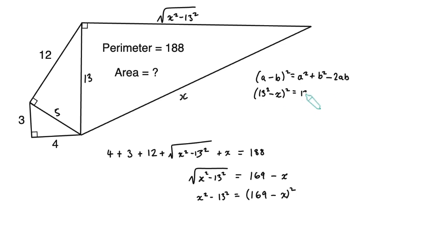So when we multiply out, we get 13 squared squared, which we'll write as 13 to the four in a second, plus X squared minus 2 times 13 squared times X. I hope you can tell the difference between my timeses and my X's here.